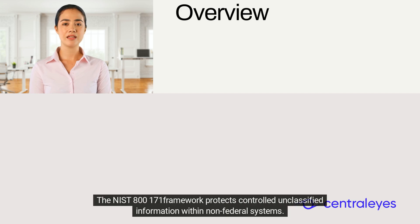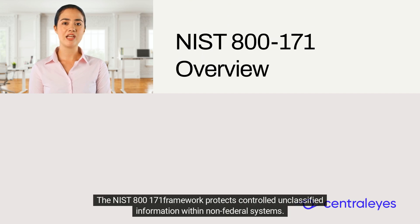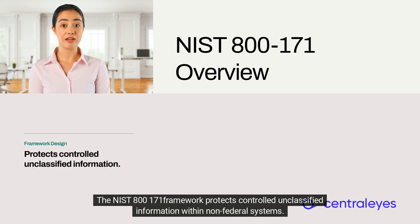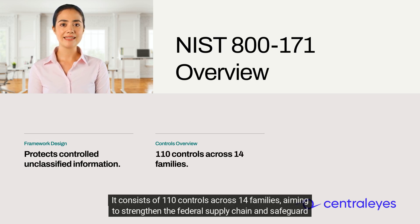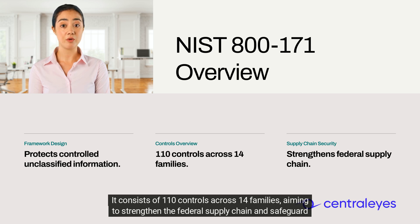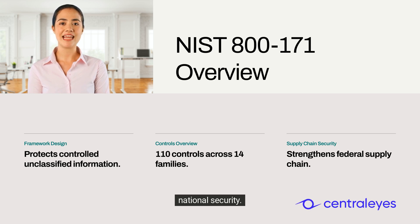The NIST 800-171 framework protects controlled unclassified information within non-federal systems. It consists of 110 controls across 14 families, aiming to strengthen the federal supply chain and safeguard national security.